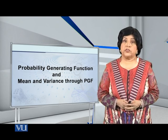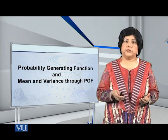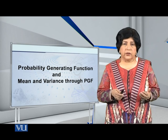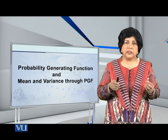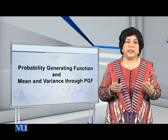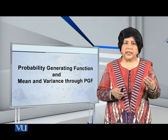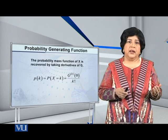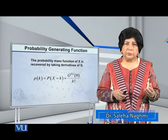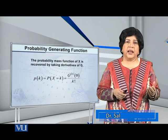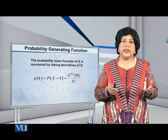Dear students, I would now like to explain how to utilize the probability generating function in order to obtain the probabilities of a discrete distribution, and also how to find the mean and variance through the probability generating function. The relationship between individual probabilities and the PGF is given in equation 1. The probability that X equals k is the k-th derivative of the PGF, evaluated at z equal to 0, then divided by k factorial.